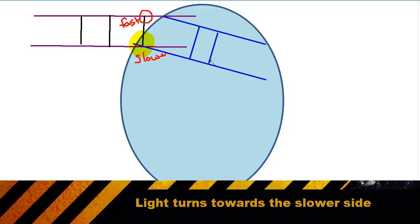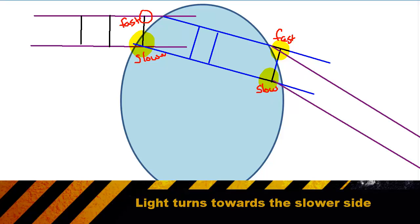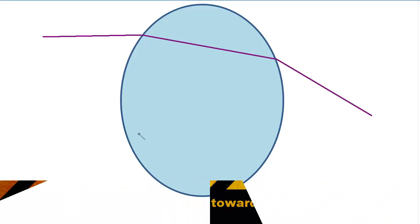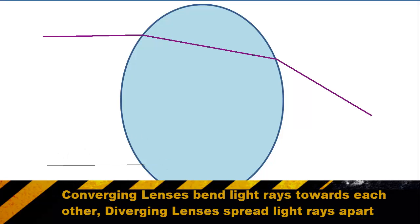Once both the top and bottom of the image are inside the lens, they travel straight — we only get turning when one side is traveling faster than the other. As the image exits the lens, the same process happens again. We draw our perpendicular lines and see one part of the image is in the lens while another part is out, so the bottom part goes slow while the top part begins to travel fast, and the image turns towards the slower side again. This rounded lens is called a converging lens.